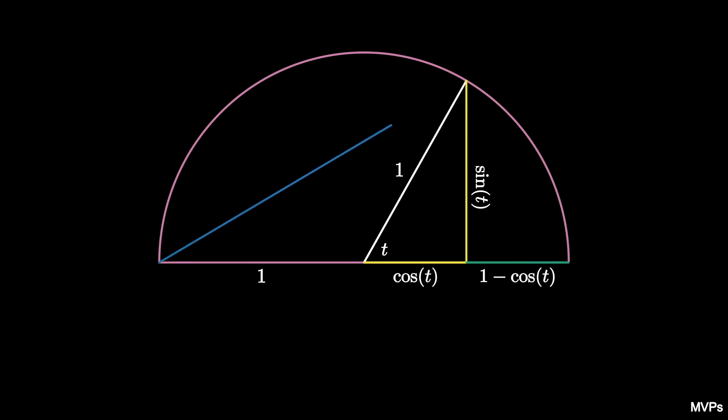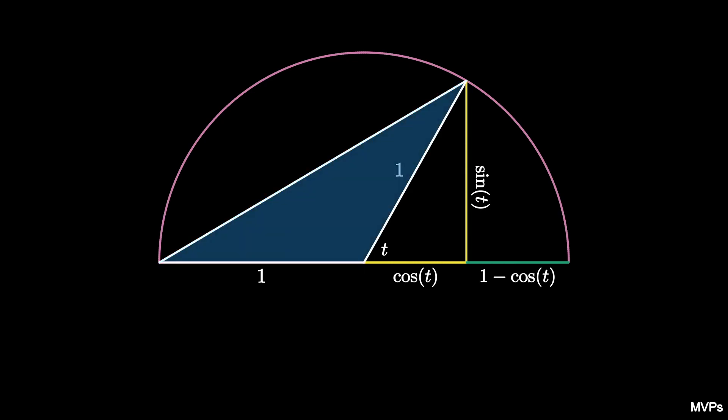The line connecting the other end of the horizontal diameter to the endpoint of the radius creates this triangle, which is isosceles because it has two congruent sides. The supplementary angle to t is 180 minus t, and because the other two angles must be equal, they must be both t over 2.